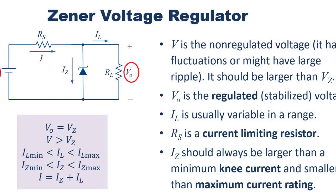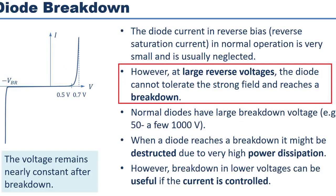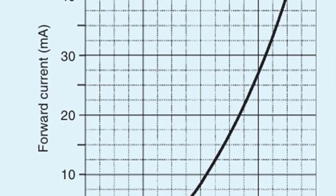Both normal and zener diodes are PN junction devices, and both conduct in forward bias. The difference is in reverse operation. A normal diode blocks current and may fail in reverse, while a zener diode is designed to conduct safely at its zener voltage. In short, the normal diode is used for rectification, while the zener diode is used for voltage regulation.